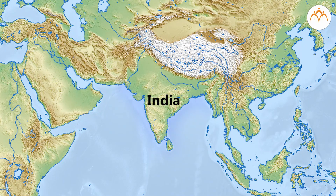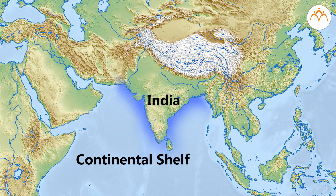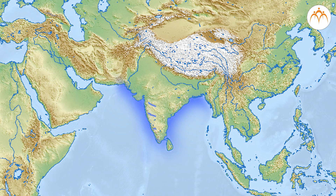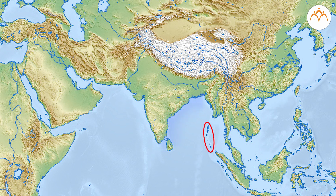India is surrounded by sea from east, west and south directions. The continental shelves on the shore are formed by different methods. Ganga, Godavari, Krishna and Kaveri end in the Bay of Bengal on the eastern coast. The shelves are formed by triangle regions. The continental shelf from Midnapur to Madurai is formed by deposits, and Andaman, Nicobar, Lakshadweep and Gulf of Manar are formed by coral rocks. The platforms on the western coast are formed by subsidence and faults.